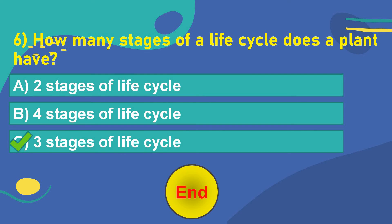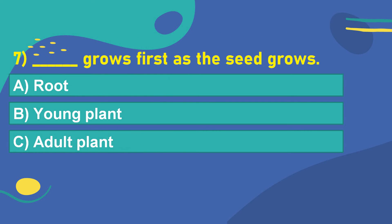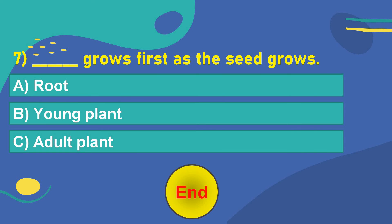Let's move on to the next question. The seventh question is: Dash grows first as the seed grows. Option A: Root. Option B: Young plant. Option C: Adult plant. Think of the answer. Your time starts now. 5, 4, 3, 2, 1, 0. OK. The correct answer is Option A: Root.